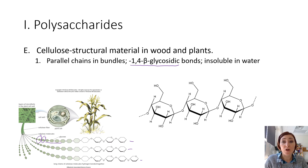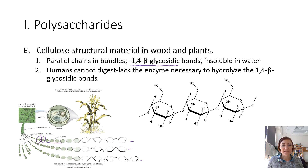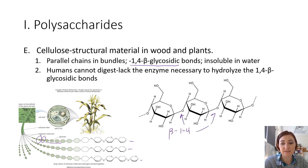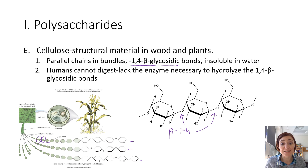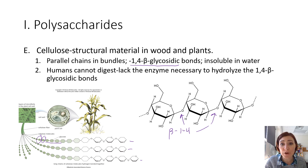Cellulose is insoluble in water, which makes sense because plants don't break down into their monosaccharides every time it rains. Humans cannot digest a beta-1,4 linkage — we don't have the necessary enzymes. When we eat plant starches like amylose and amylopectin, we can break those apart because they have alpha-1,4 linkages, but we cannot break down cellulose with its beta-1,4 linkage.